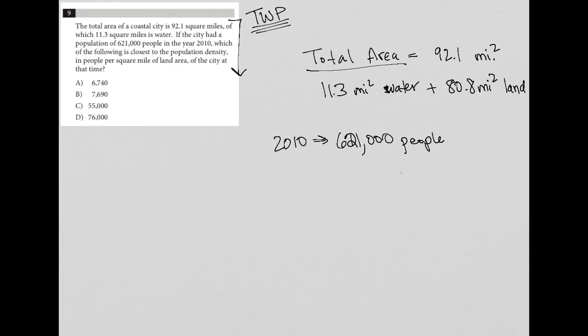Which of the following is closest to the population density in people per square mile of land area? So very important line here - people per square mile of land area - because we already found the land area, and we know the people. So if we want people per, I'll just write this down so we can see it clearly: people per square mile land area.